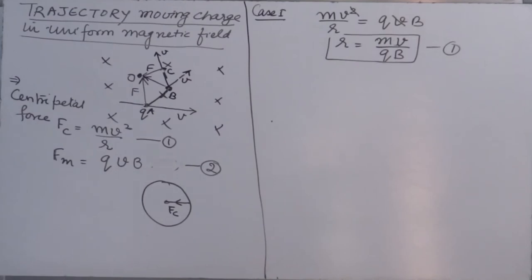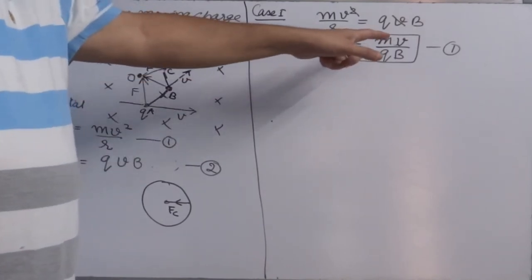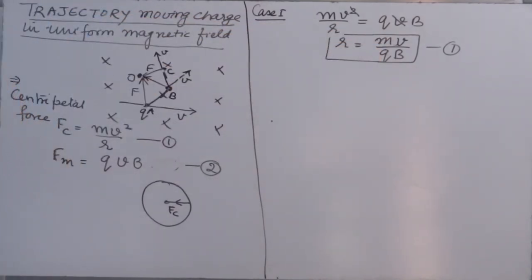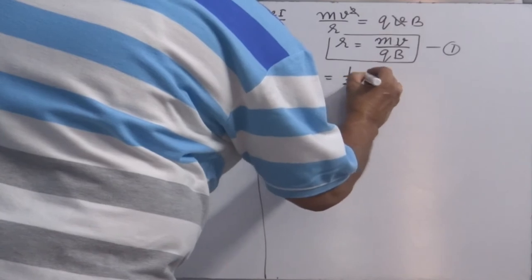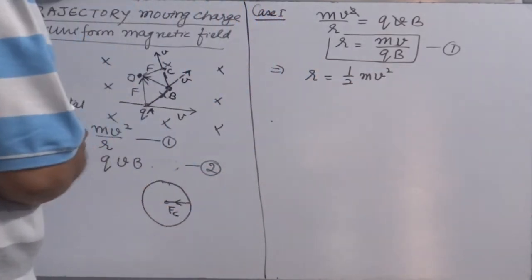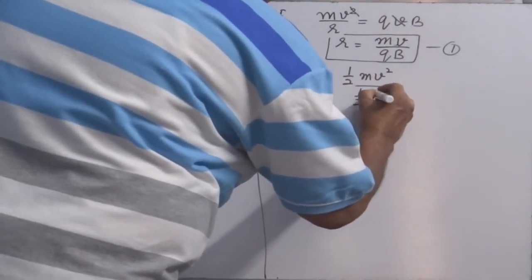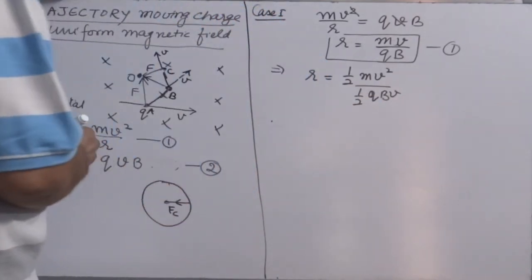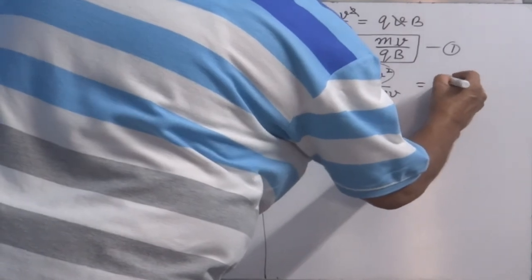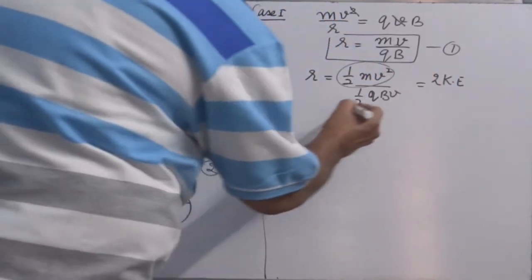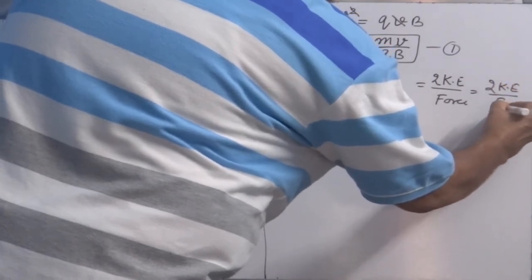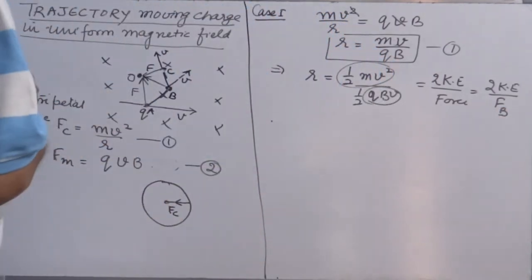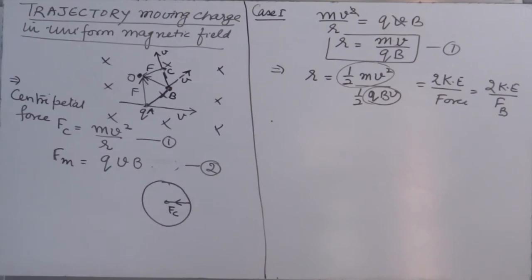The radius is decided by three factors: momentum, charge, and magnetic field. You can play with this formula — multiplying by ½Mv² on top and ½QvB on the bottom gives 2(kinetic energy) over (force due to magnetic field). The ratio of 2KE to the magnetic force also measures the radius of the circular path.